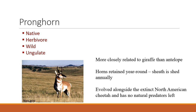Pronghorn, or pronghorn antelope, are also very common on rangelands because they really like wide, open space — they like to see their predators before they arrive. They're native, herbivores, wild, and ungulates. Interestingly, they're not really antelope; they're more closely related to giraffes. They're very fast because they apparently evolved in North America when we had really fast predators, such as a North American cheetah that used to exist.